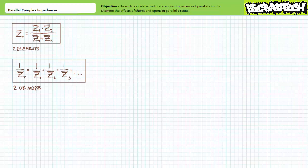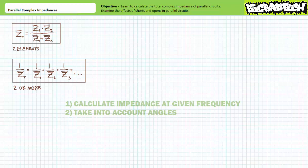Luckily both methods are almost direct one-for-one copies of those methods we employed in the DC circuit analysis of resistors. However, one needs to take into account two additional rules when dealing with complex impedances. First, one needs to calculate the complex impedance of elements comprising the parallel relationship at that specific frequency, and second, one must take into account the angle of those complex impedances comprising the parallel relationship during the calculation process. Long story short, direction matters and if you forget this fact you will fail.